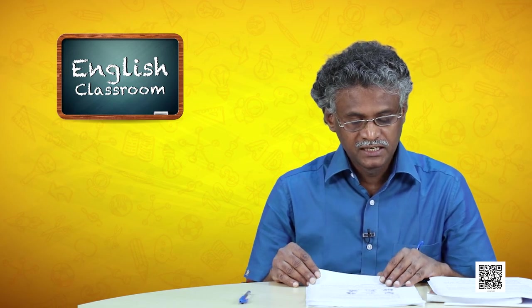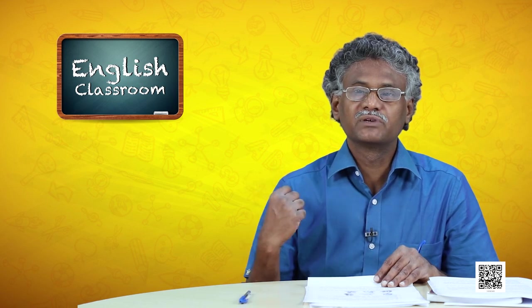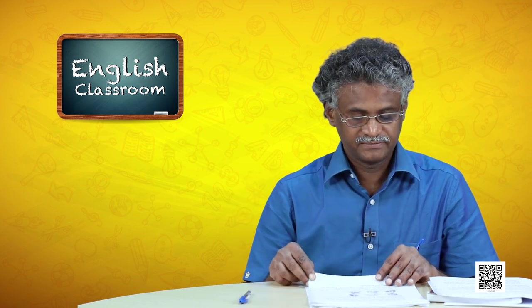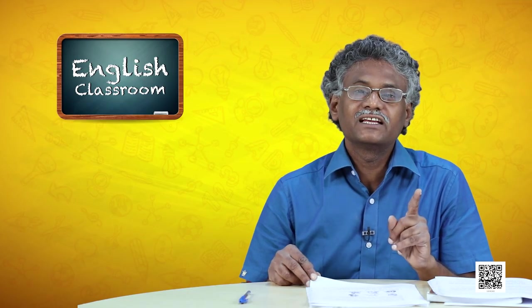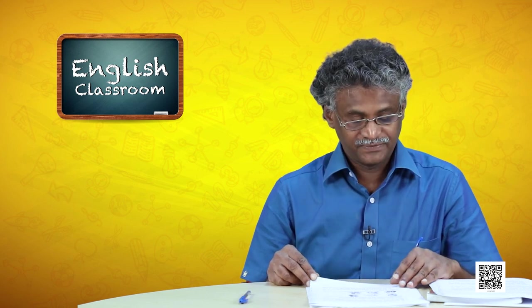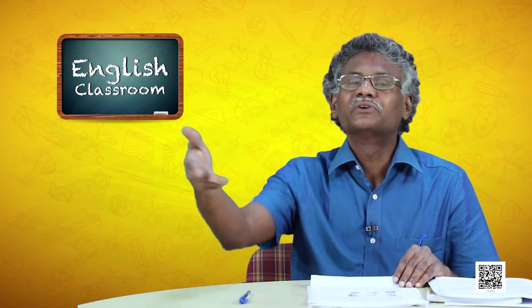Some of the names Mandela mentioned: Oliver Tambo, Walter Sisulu, Chief Luthuli, Yusuf Dadoo, Bram Fischer, Robert Sobukwe. He says he remembered his friends who stood shoulder to shoulder with him in his struggle. Mandela also says the military generals who would have arrested him not long ago now saluted him, because the same Nelson Mandela had been declared a terrorist, arrested, and imprisoned for more than 26 years.